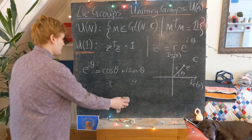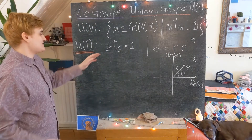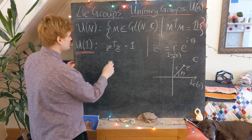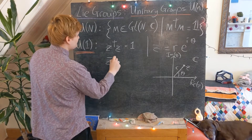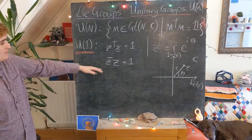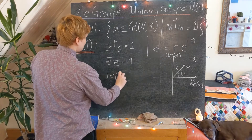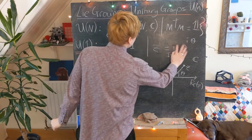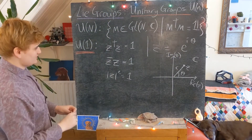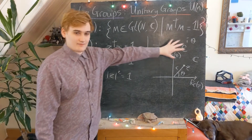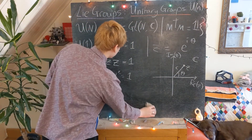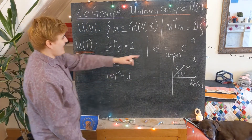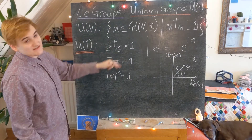Looking at the unitary condition, Z†Z for a one-dimensional complex number is just the complex conjugate times Z. This is really just stating that the modulus squared of our complex number has to equal one. In our exponential notation, we're considering a complex number with modulus one — simply a number lying somewhere on e^(iθ), which is the unit circle in the complex plane. So the condition tells us that our modulus R has to be one.